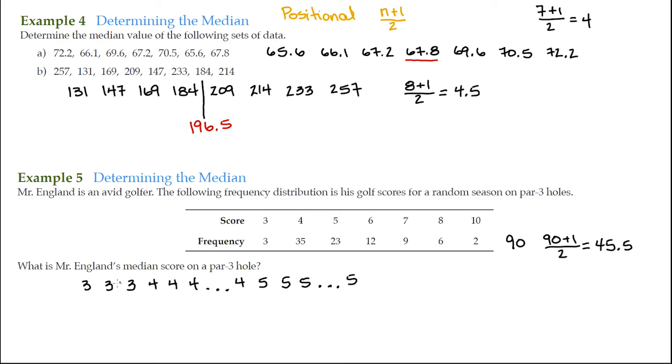Well, he scored a 3, 3 times. He scored a 4, 35 times or in other words from here to here that's 38 scores already. 3 plus 35 is 38. Add on another 23 then from here to here, 38 scores from 3 all the way to the end of 4, 23 more that's 61 scores.